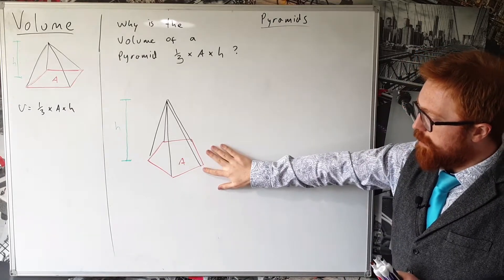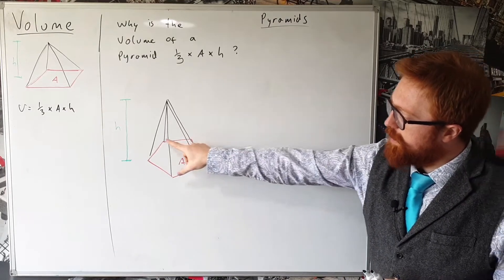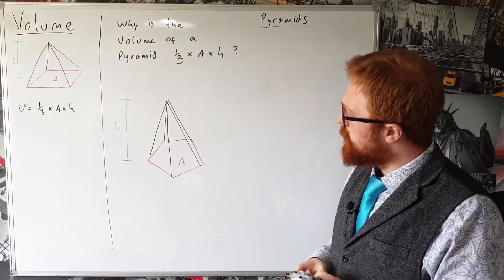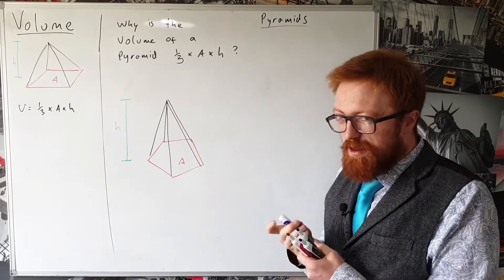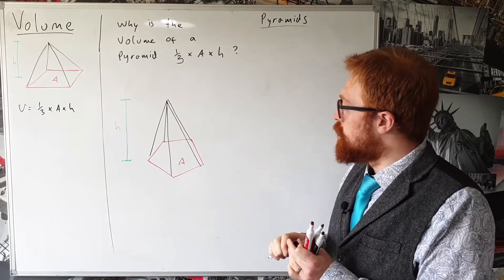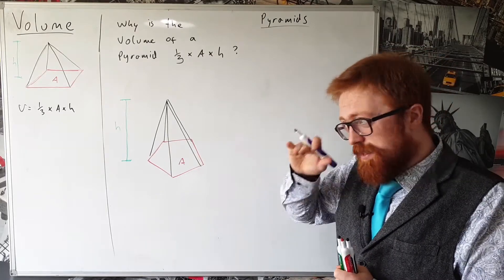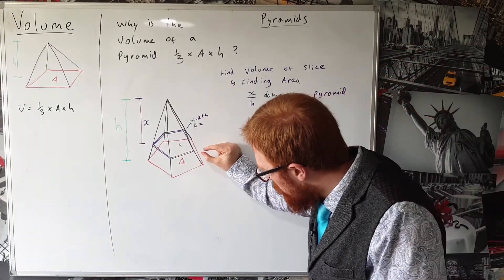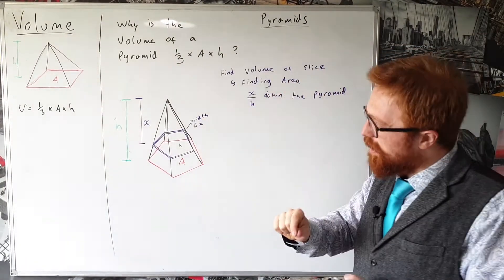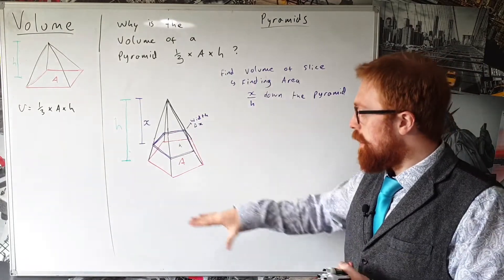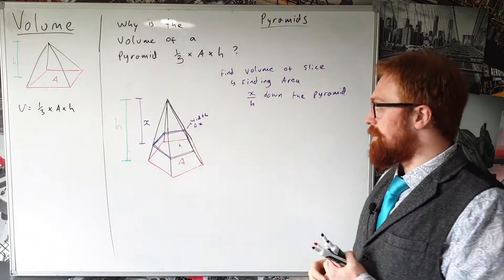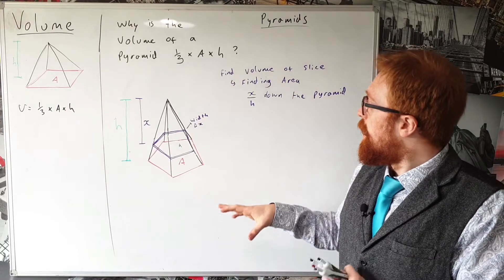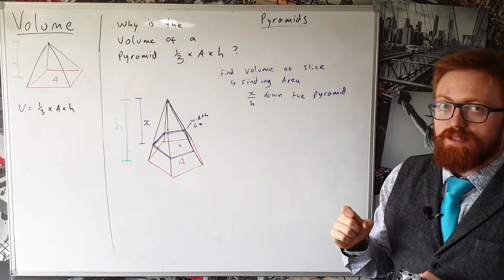So what we've got is a pyramid with a base of area A and a height of H. What we're going to do, in a more general sense, is chop this pyramid into lots of thin layers and add up the volumes of each of those layers. If we make the slices infinitely thin and add up infinitely many of them, it's going to be exactly the volume of the pyramid. So that's our general strategy. I've drawn one of these slices, and our first step is to find the volume of one of the slices.